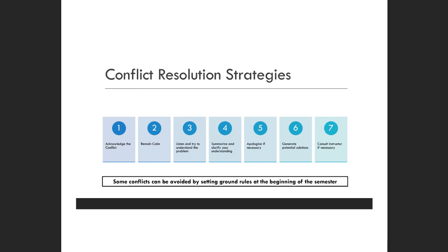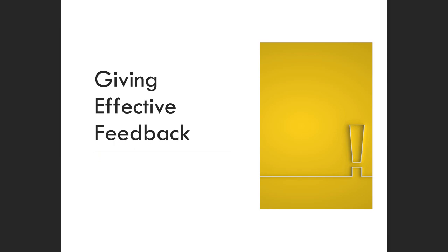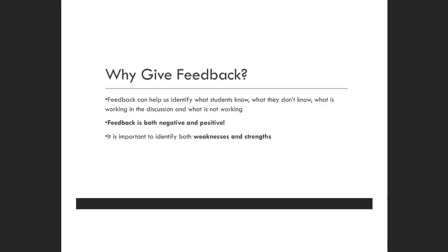After you've put together your learning goals, meaningful questions, and set that classroom environment, something you're responsible for as an instructor is giving effective feedback. This is something you'll be doing continuously. Feedback isn't always just writing a paragraph of comments after marking an essay — it's also little things like comments during discussions, words of encouragement, words of things to expand on and study. Feedback can help us identify what students know, what they don't know, what's working in the discussion and what's not. Don't forget that feedback is both negative and positive. You have to also point out the positives — let the student know this is something they're doing right, so they don't get so caught up in things they need to improve, encouraging them to continue in that aspect.